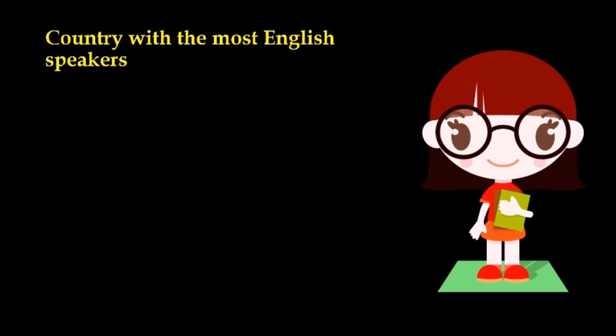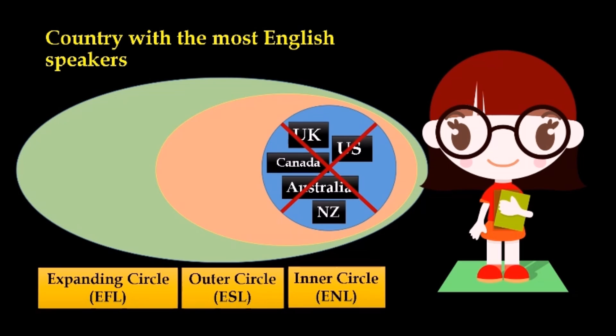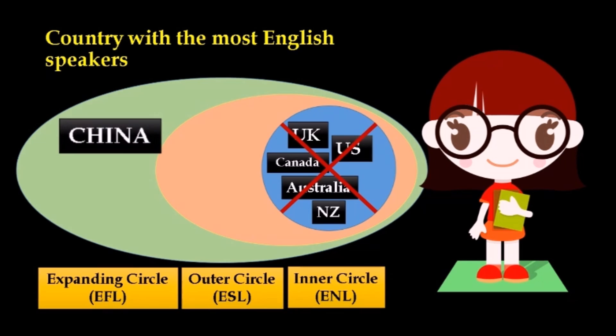Do you know? The country with the most speakers of English is no longer one of the inner circle category. It is actually China, an expanding circle country. In China today, learning English is compulsory from the early years of primary school.